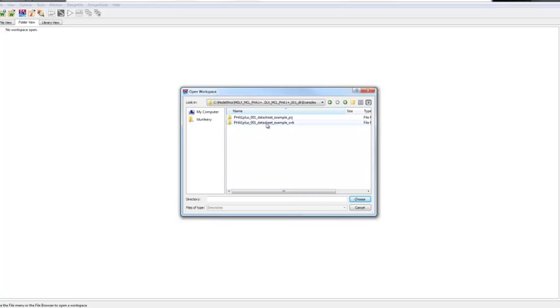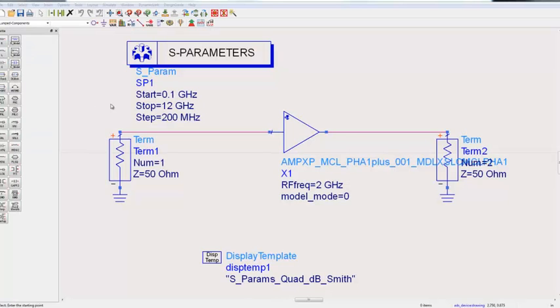I will open up the examples and I am going to want the workspace version. And what has come up already is a file that represents a circuit schematic for a linear simulation of the PHA1 Plus amplifier.